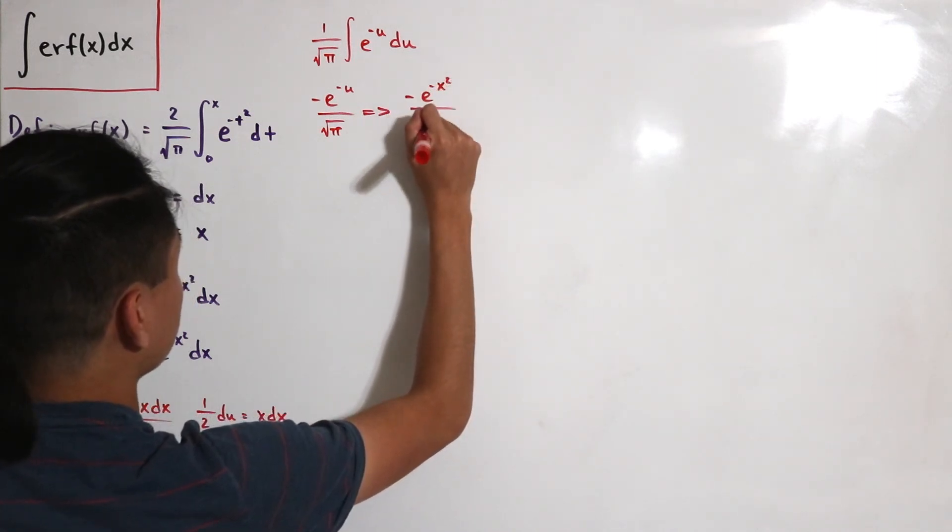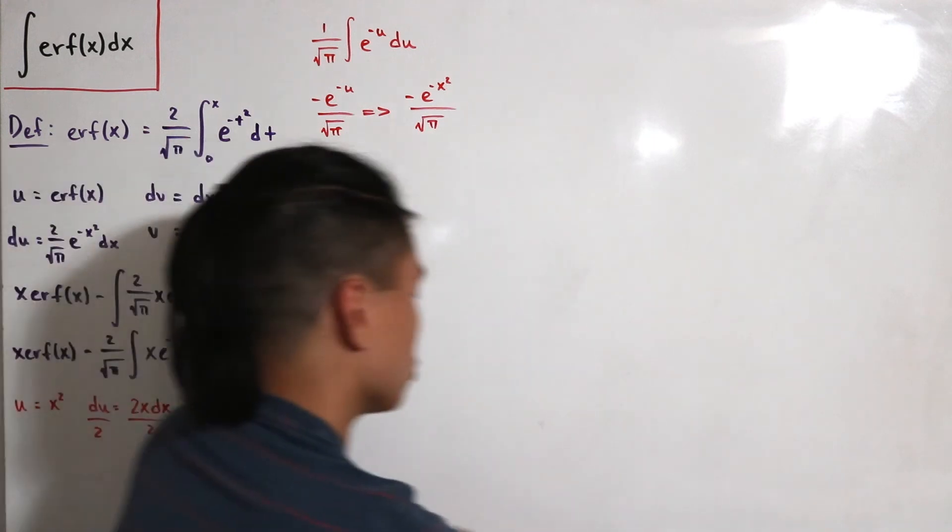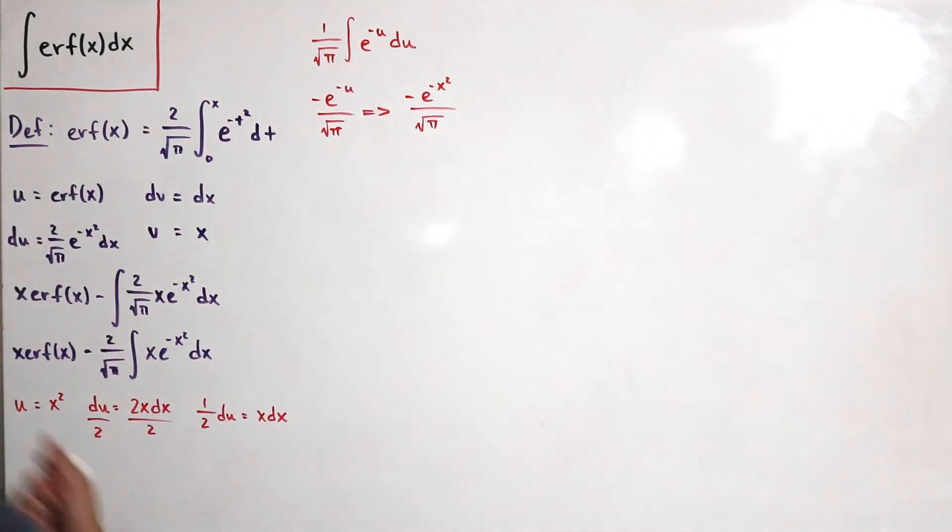And so we just calculated this piece over here. So substituting it back we have a minus and then a minus that cancels.